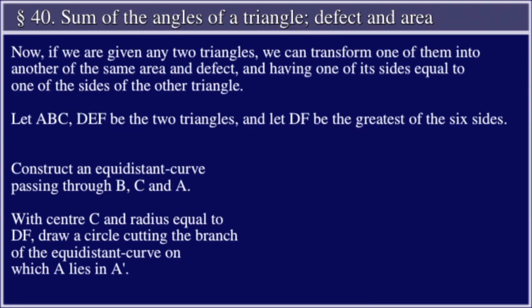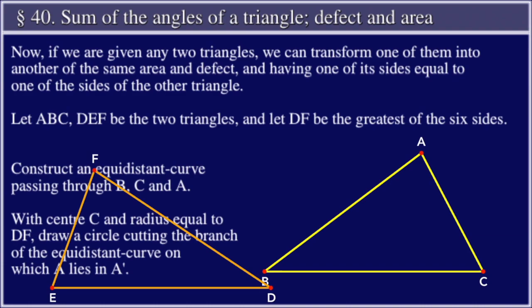Now if we are given any two triangles, we can transform one of them into another of the same area and defect, and having one of its sides equal to one of the sides of the other triangle. Let ABC, DEF be the two triangles, and let DF be the greatest of the six sides.